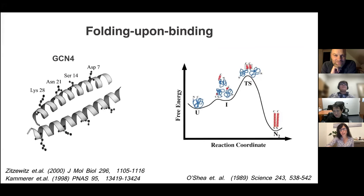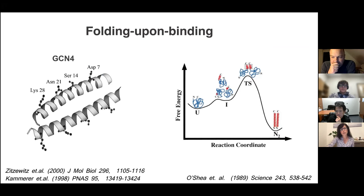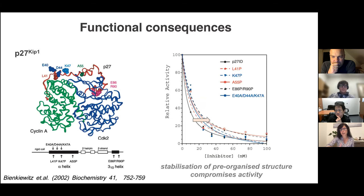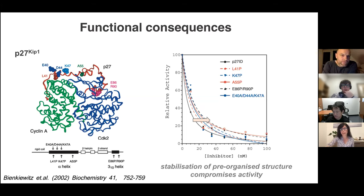We knew that some proteins adopt a well-structured conformation upon binding, and some of these pre-organized elements may be present in the unbound state, even before the transition state. We also knew that the functional consequences of having such elements can be controversial. In some cases it really helps binding or activity, whereas in other cases, as shown for p27, having a destabilized helix is actually beneficial.